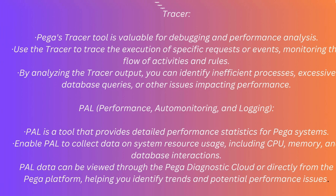Tracer: PEGA's tracer tool is valuable for debugging and performance analysis. Use the tracer to trace the execution of specific requests or events, monitoring the flow of activities and rules. By analyzing the tracer output, you can identify inefficient processes, excessive database queries, or other issues impacting performance. PAL (Performance Auto-Monitoring and Logging): PAL is a tool that provides detailed performance statistics for PEGA systems. Enable PAL to collect data on system resource usage, including CPU, memory, and database interactions. PAL data can be viewed through the PEGA Diagnostic Cloud or directly from the PEGA platform, helping you identify trends and potential performance issues.